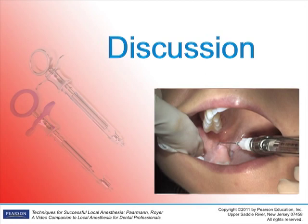Complications: Trismus is not an uncommon complication with this injection. Other possible complications include hematoma or facial nerve paralysis if the needle is directed too far posteriorly and bone has not been contacted.